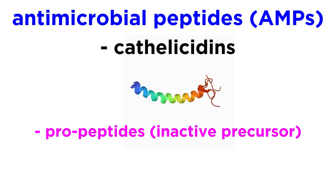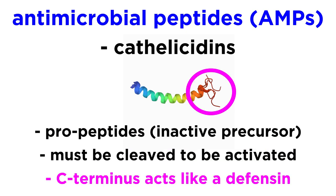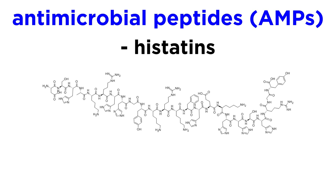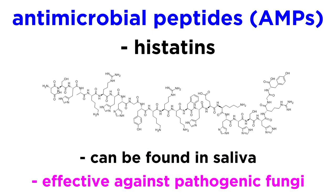Cathelicidins are produced as propeptides, which means an inactive protein precursor, and must be cleaved in order to be activated. Once cleaved, the carboxy terminal region functions similarly to a defensin, as it is also an amphipathic cationic peptide that disrupts pathogen membranes. Finally, there are the histatins, which are found in saliva and are particularly effective against pathogenic fungi.